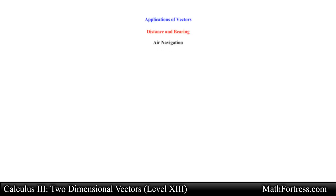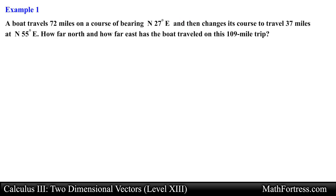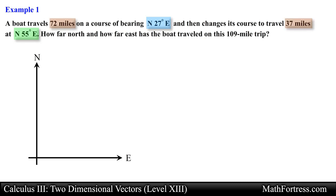Alright, let's go over a couple of examples. A boat travels 72 miles on a course of bearing 27 degrees east of north, and then changes its course to travel 37 miles at 55 degrees east of north. How far north and how far east has the boat traveled on this 109-mile trip? We can solve this by using vectors to represent each of the two bearings, with the magnitude of each vector representing the distance traveled. We find how far north and east the boat traveled by finding the resulting vector and using its components.